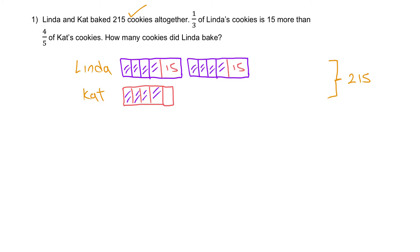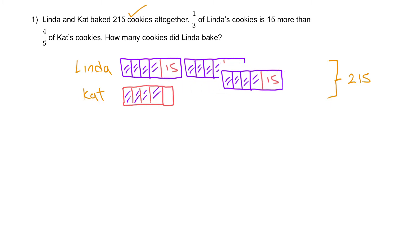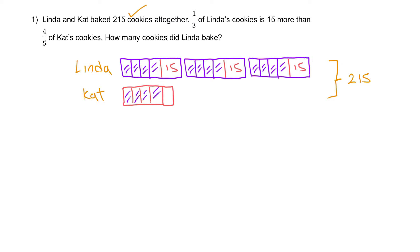I'll multiply out to show the second third and the last third — and now I'm done with the model. Looking at this model, I can figure out what one unit is. Over here I have how many units total? Eight units from Linda's side plus the Kate units... that gives me 12 plus 5 — 17 units.